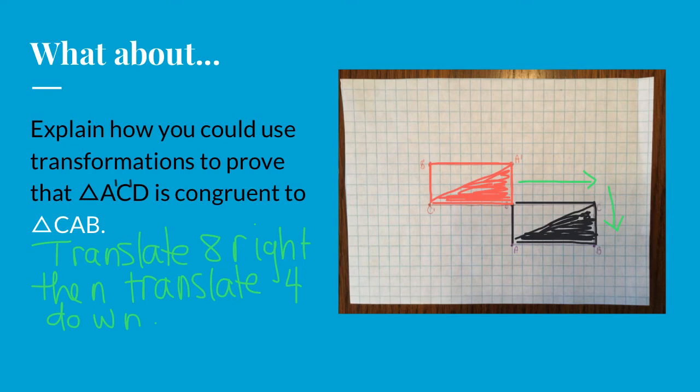But then I noticed my corners. A prime is sitting on top of C, and C prime is sitting on top of A. And I thought I had a failure until I looked at it a little more closely.